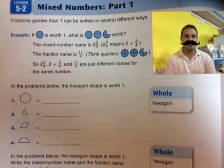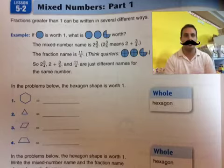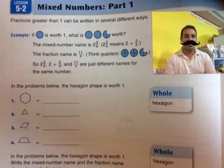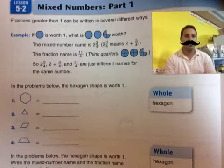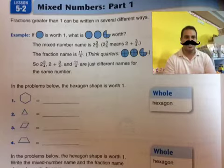Howdy, boys and girls. Welcome to lesson 5-2. In this lesson, we're going to be looking at how to change a fraction into a mixed number, or how to identify mixed numbers. We're going to use polygons such as regular polygons, hexagons, triangles, parallelograms or rhombuses, and trapezoids. We're going to break them up so that we can make mixed numbers. Let's get started.